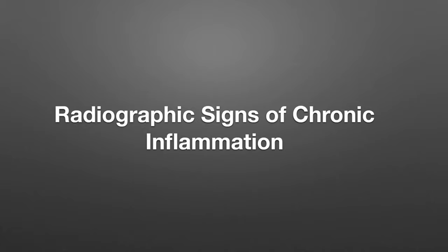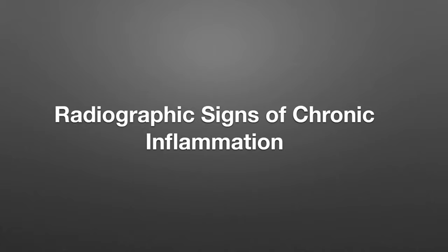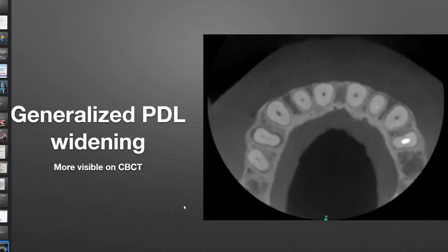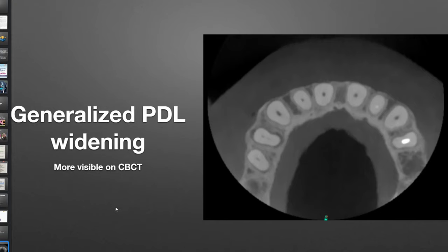One other thing we can look at that gives us an idea of chronic inflammation is actually in the radiograph — you can see PDL widening. It's a little easier to see on a cone beam. Notice the widening here — that's not perio because it's just in this one area. What happened is she had a big occlusal interference on tooth number five that was causing fremitus, moving the tooth back and forth. So the PDL actually gets wider and you can see that on cone beams, but not really on PAs.